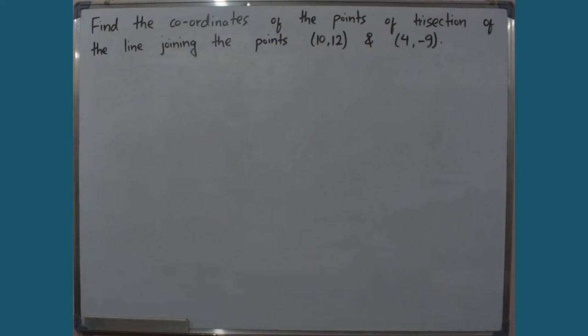Find the coordinates of the points of trisection of the line joining the points (10, 12) and (4, 9). We will use trisection — if we divide a line into 3 equal parts, just like trisection.